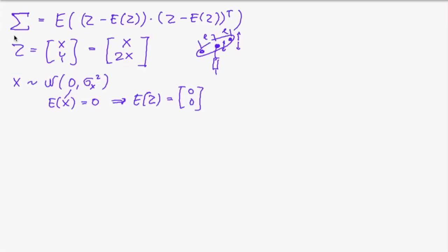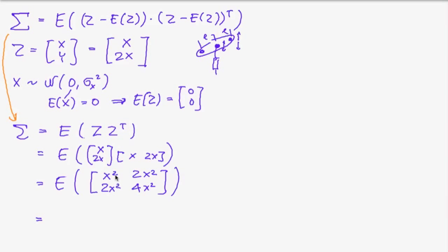And so the formula above here becomes very simple. σ now is just the expectation of C, C transposed, which is the same as x2x times x2x as a row vector, which is simply x squared, 2x squared and 4x squared. And this is symmetric. But the expectation of x squared is the variance of x. So this simply becomes σx squared times the matrix 1, 2, 2,